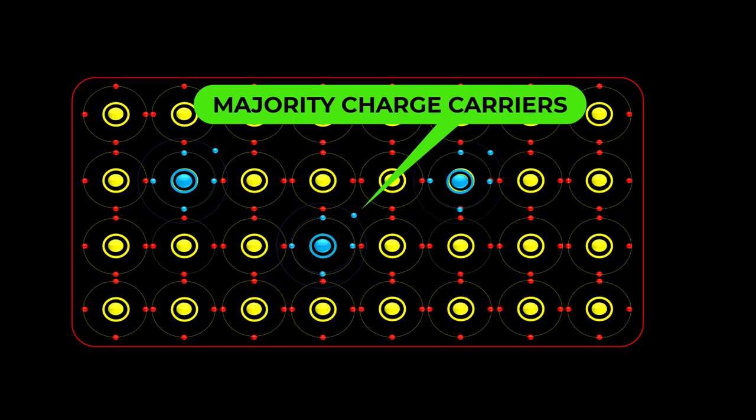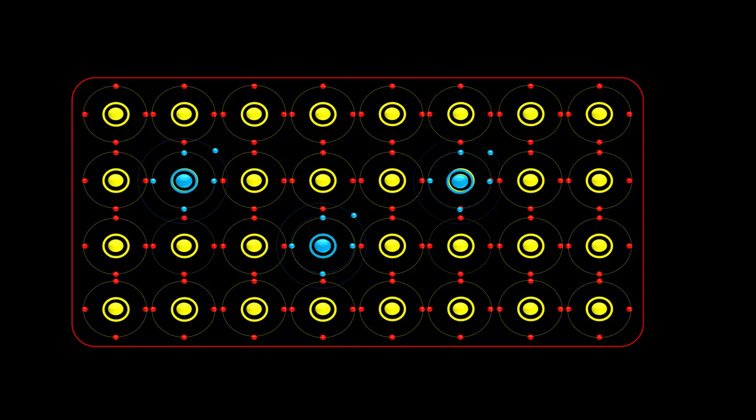Holes are less abundant in n-type material, therefore they are called minority carriers. P-type materials are covered in a separate video.